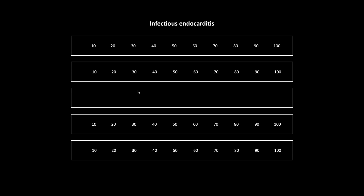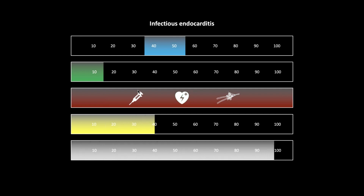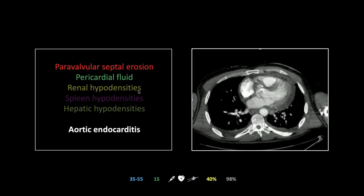Another case of infectious endocarditis — a slightly different manifestation. Age range 30 to 55, 15 per hundred thousand, 20% in-hospital mortality and 40% first-year mortality, with 98% CT sensitivity. This is an aortic infection. There is no vegetation to point to, which is the definitive finding for endocarditis, but there is an equally definitive finding: erosion into the uppermost portion of the muscular septum, adjacent and anterior to the aortic valve.